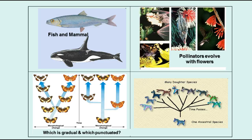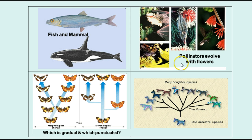Here we have some pictures to see which represents which. This represents convergent evolution, when you have species that are vastly different from each other but end up looking similar because they live in the same kind of environment and have similar adaptations. Then we have coevolution, where the pollinators evolve with the flowers — changes in the flowers cause a response in the pollinator to change as well.